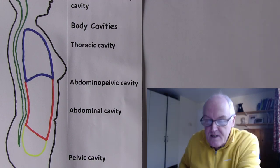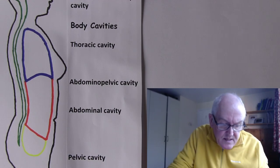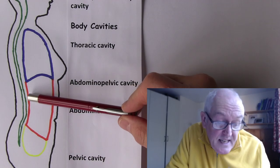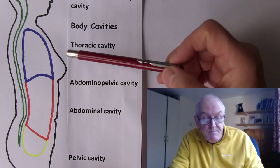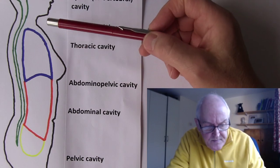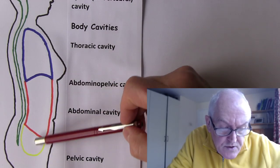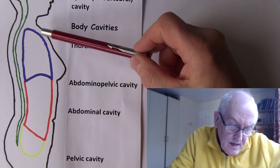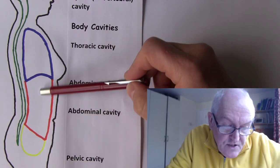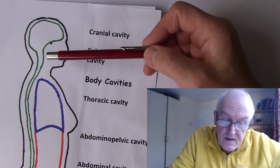Continuing our series on body cavities: we have the pelvic cavity and abdominal cavity together forming the abdominopelvic cavity, and above this the thoracic or chest cavity. These are called the anterior or ventral cavities because they're at the front — the ventral surface of the body. We also notice there are cavities at the back.